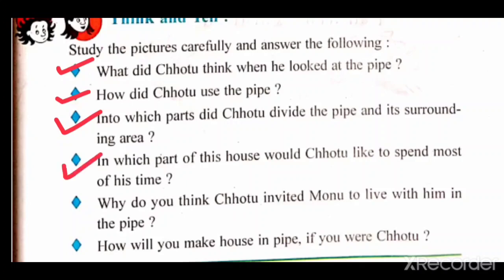In the fourth question: in which part of this house would Chotu like to spend most of his time? Chotu would like to spend most of his time in the place kept for guests and friends. In the fifth question: why do you think Chotu invited Mono to live with him in the pipe? Just like Chotu, Mono has also come to Ahmedabad for the first time and he too has no place to stay. Moreover, Chotu wanted a friend to stay with him. Therefore, Chotu invited Mono to live with him in the pipe.